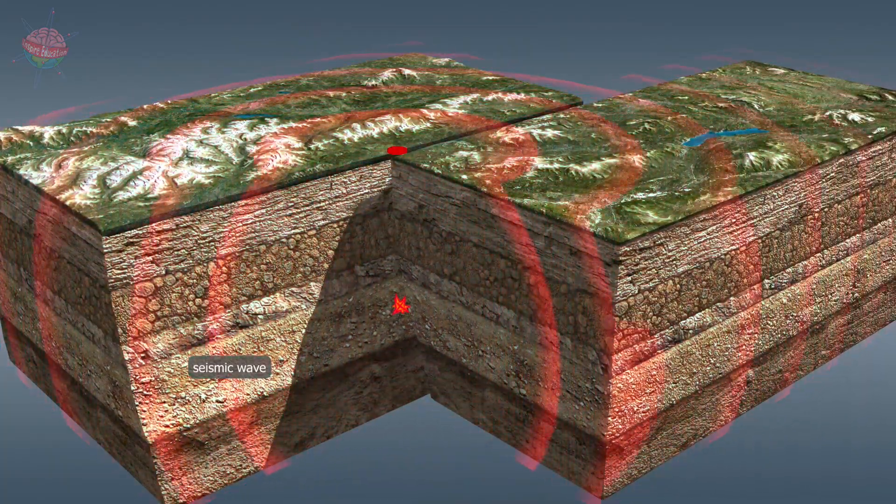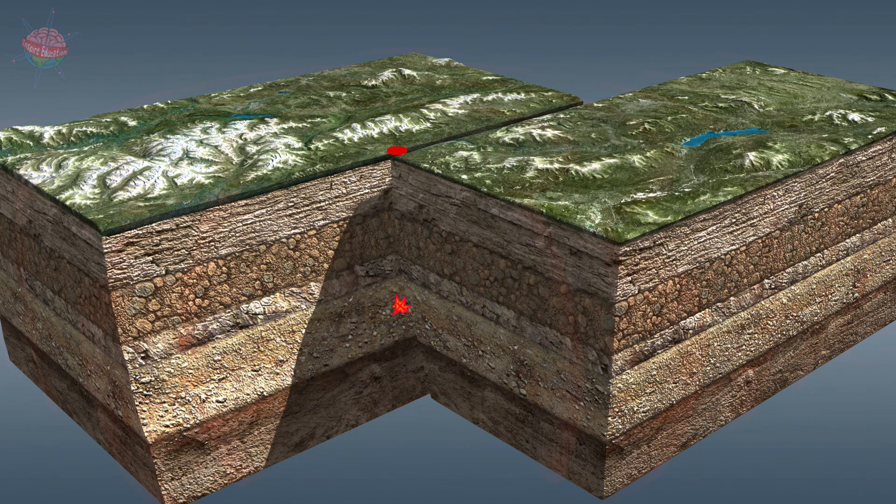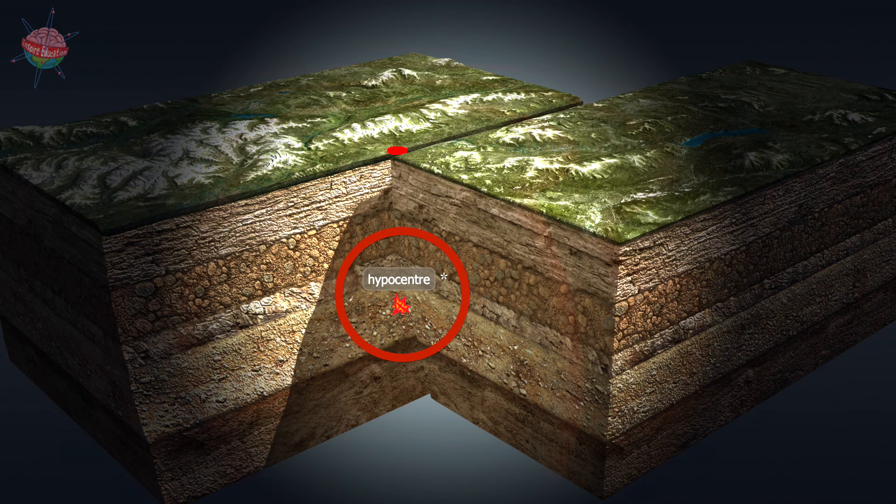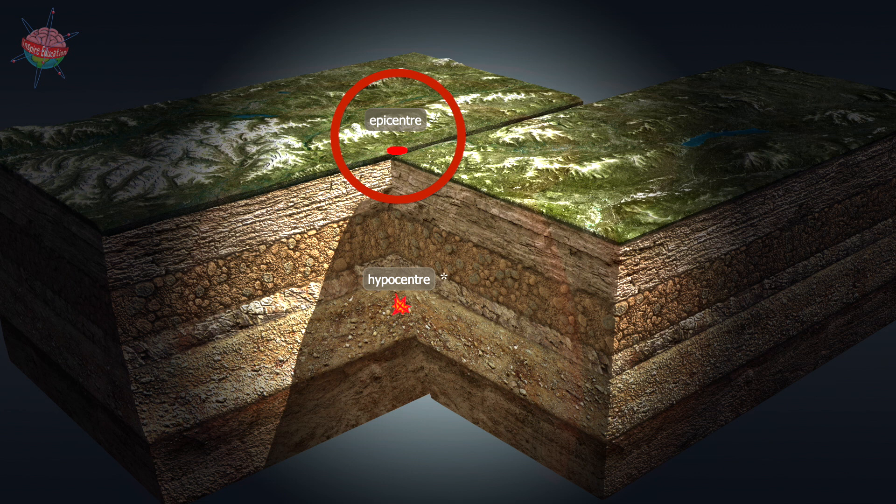The point of origin of an earthquake, where permanent deformation occurs, is called the focus or hypocenter. The point on the Earth's surface nearest to the focus is the epicenter. Here the earthquake has the greatest strength and destructive power. The distance between the hypocenter and the epicenter is the focal depth of the earthquake.